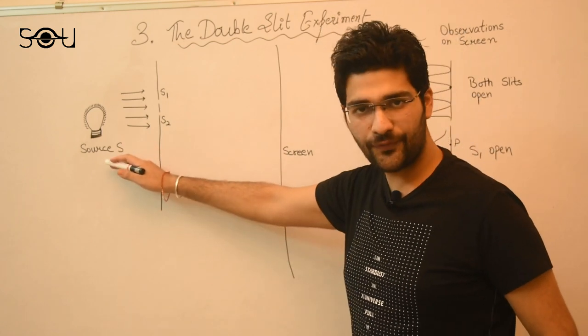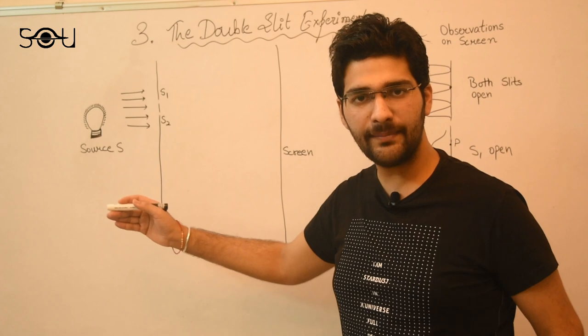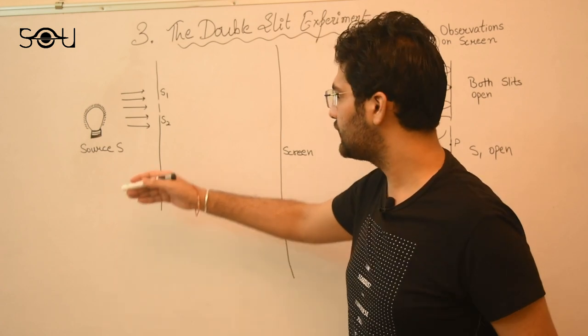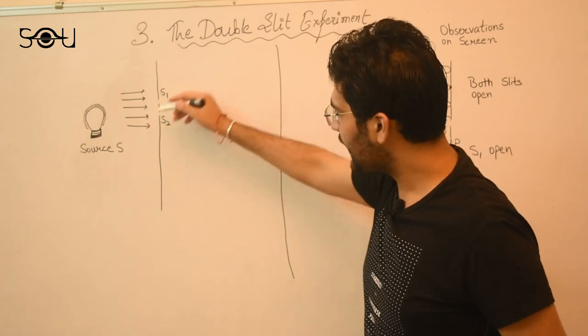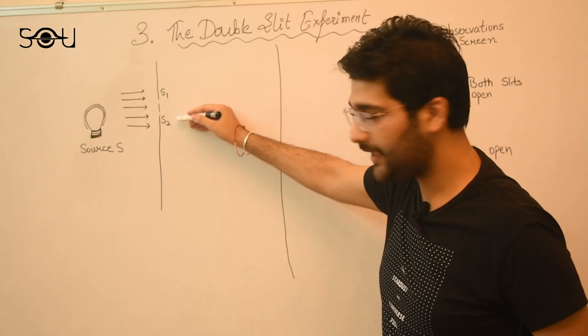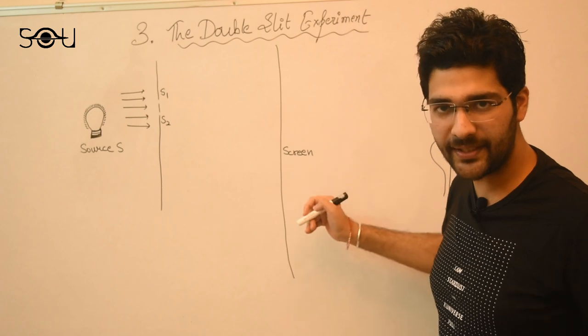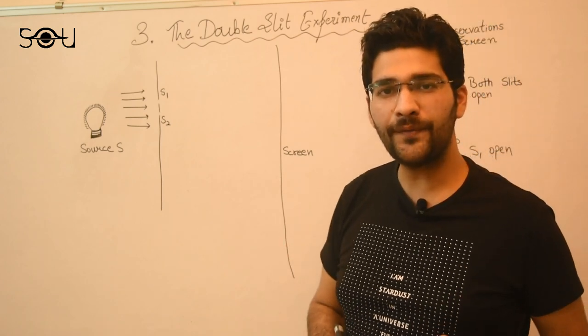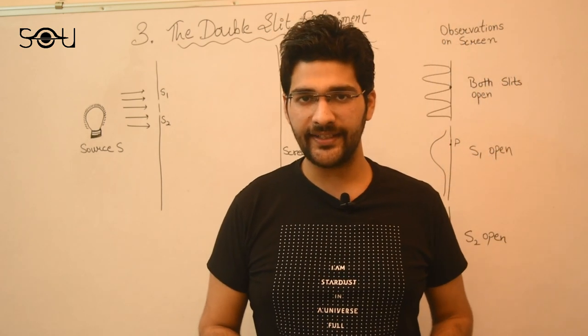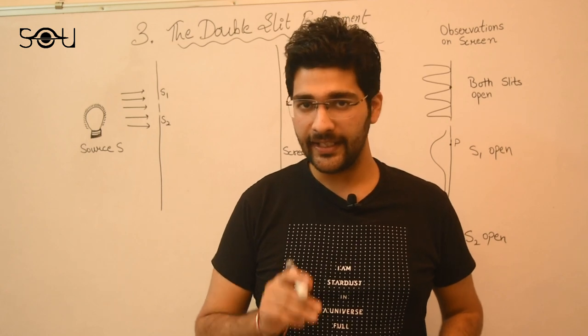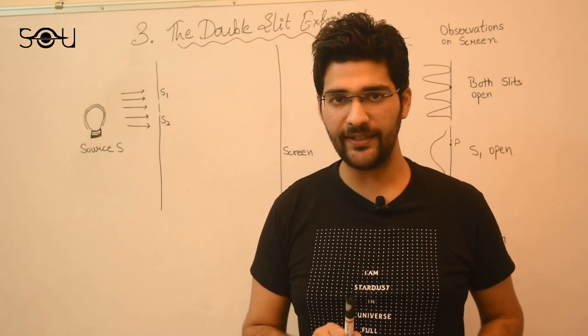The setup of this experiment is very easy to understand. We have a monochromatic source of light S. Monochromatic means comprising a single wavelength. Light from this source enters a couple of slits S1 and S2 and falls on a screen behind the slits at some distance. Now before we see what this experiment actually tells us about the nature of light, let us see what we observe on the screen first.